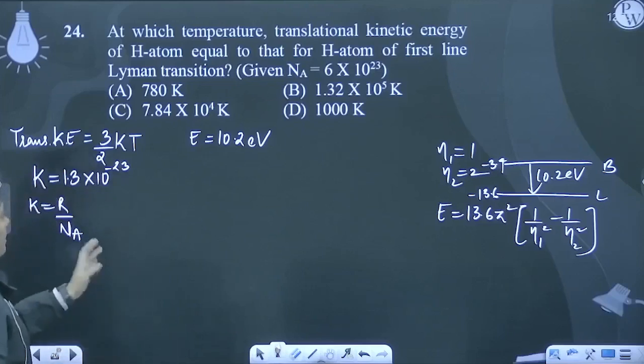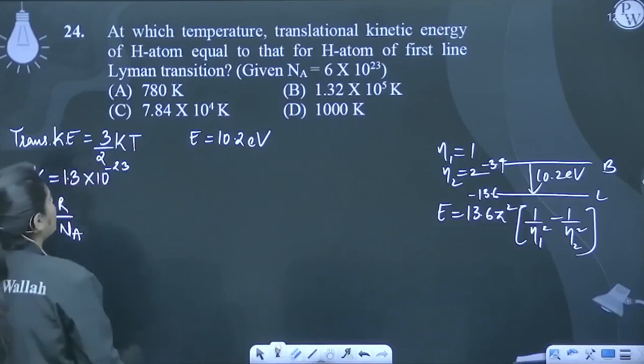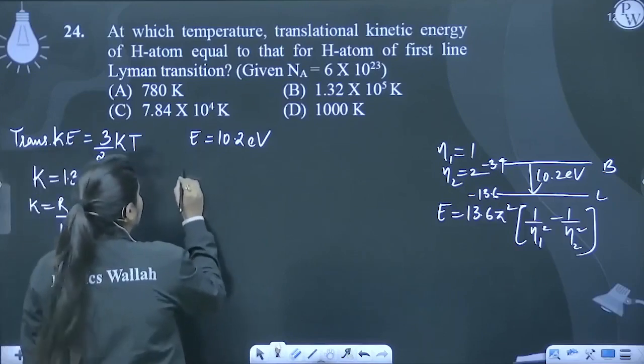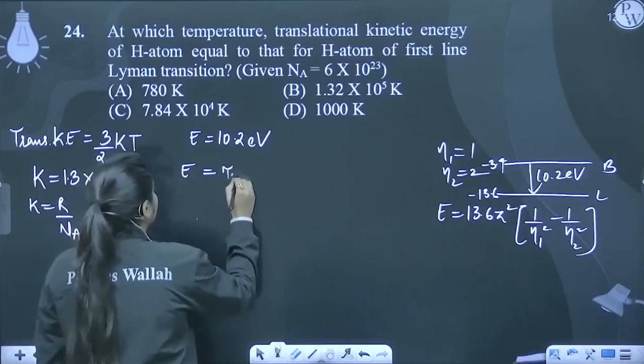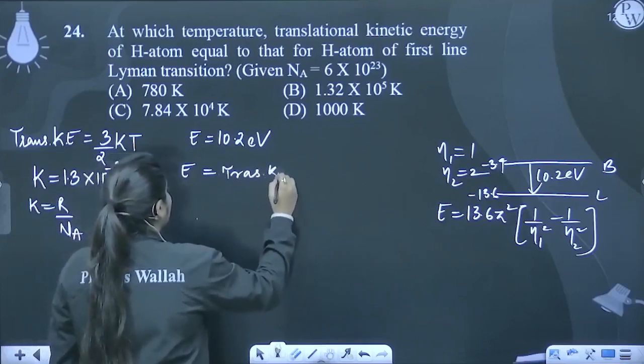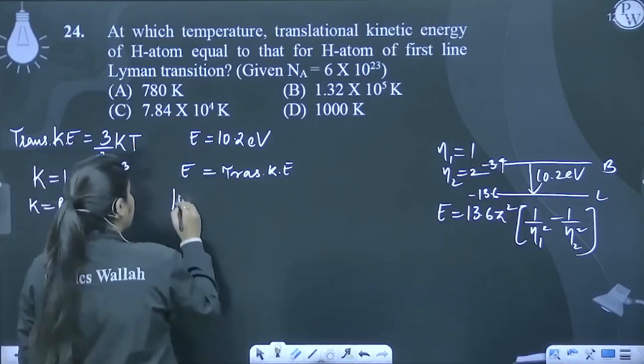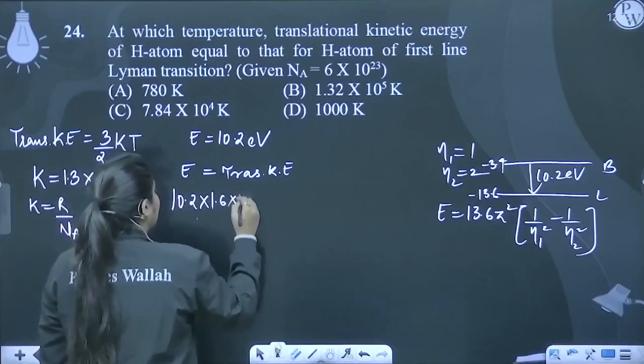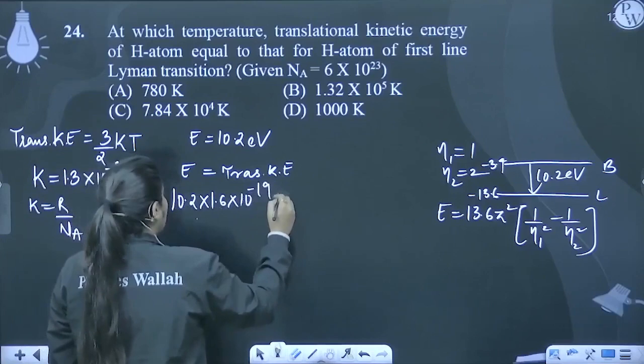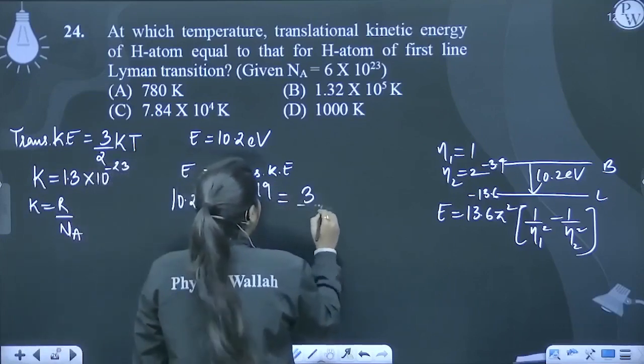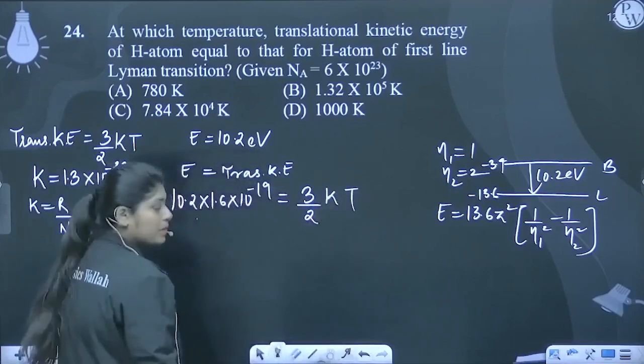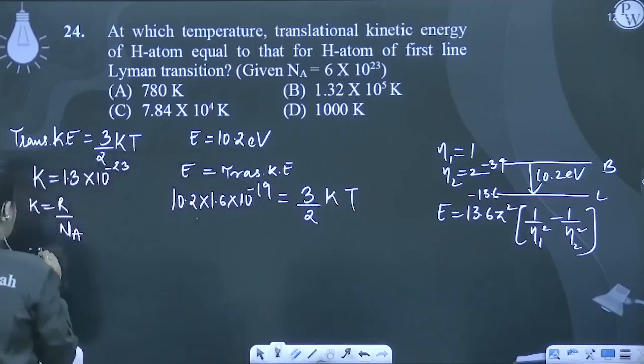Now, what is this energy and this energy? What is equal? This energy and this energy is kinetic energy. It will be equal. Now, what we need, which is what we need? Which will be equal to joule. So we will change this energy. 10.2 into 1.6 into 10 to the power of minus 19 is equal to 3 by 2 into k into temperature. Where T is temperature. So we have T, this temperature.